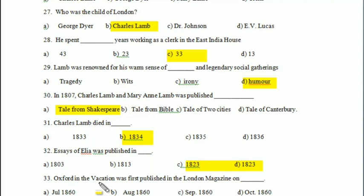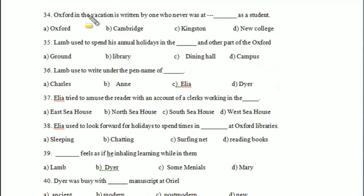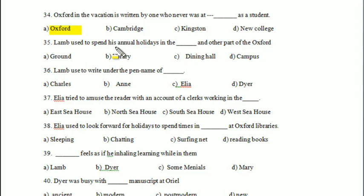'Oxford in the Vacation' was first published in the London Magazine in — July, August, September, or October 1860? It was October 1860. 'Oxford in the Vacation' is written by one who never was at — Oxford, Cambridge, Kingston, or New College — as a student? Your answer is Oxford. Lamb used to spend his annual holidays in the — library, dining hall, or campus? Your answer is 'library.'